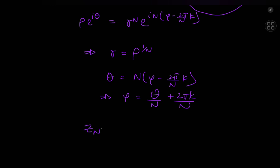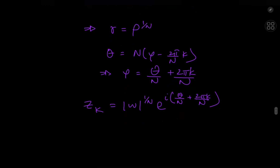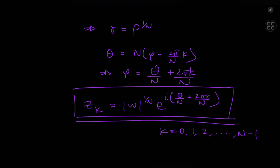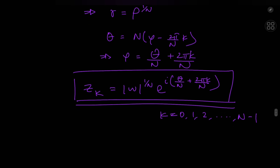So the nth roots of w are given by z_k = |w|^(1/n) · e^(i(θ/n + 2πk/n)), where θ is the argument of w and k = 0, 1, 2, …, n−1. That's how you find the nth roots of any complex number w. In the special case where w = 1, the z_k's are called the nth roots of unity.